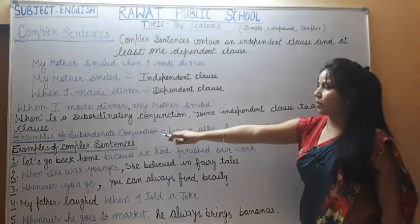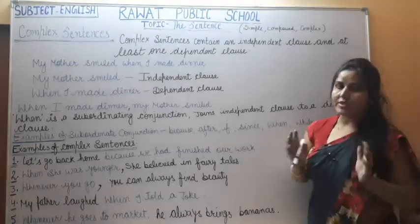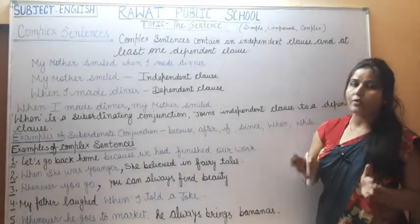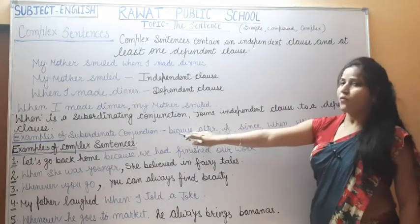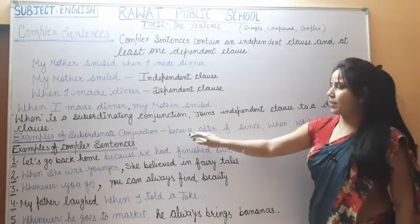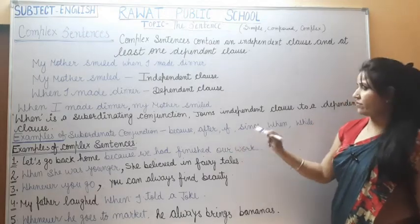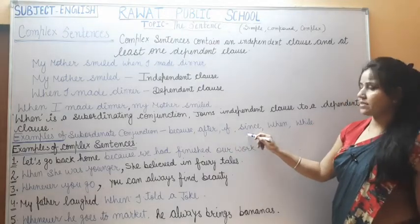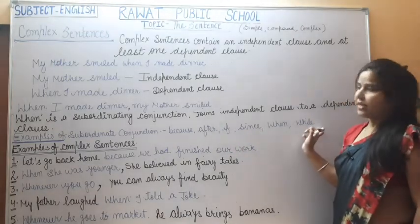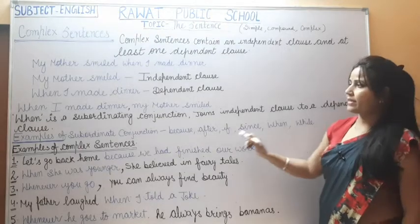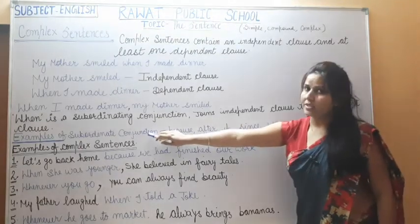Examples of subordinate conjunctions: because, after, if, since, when, and why. These are examples of subordinate conjunctions used in complex sentences.